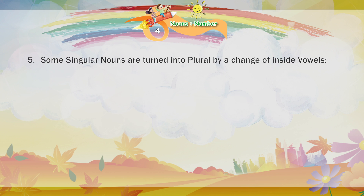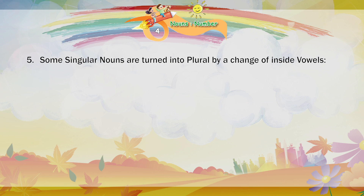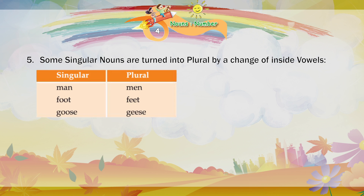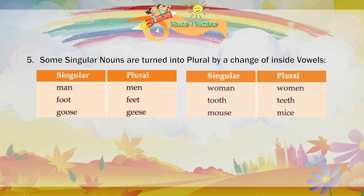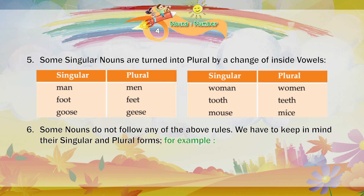Some singular nouns are turned into plural by a change of inside vowels. Singular — Plural. Man — Men. Foot — Feet. Goose — Geese. Woman — Women. Tooth — Teeth. Mouse — Mice.